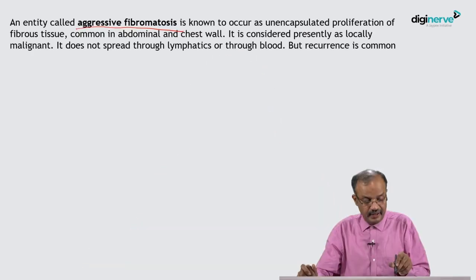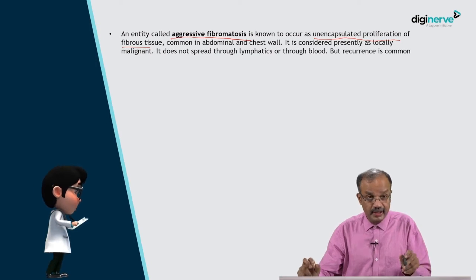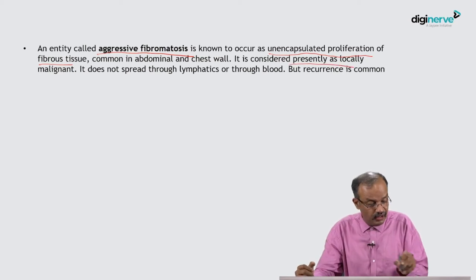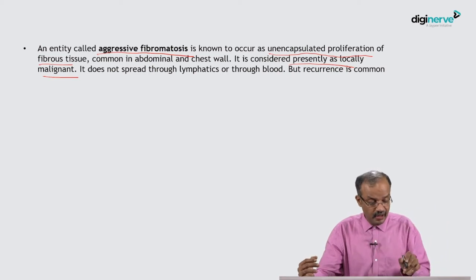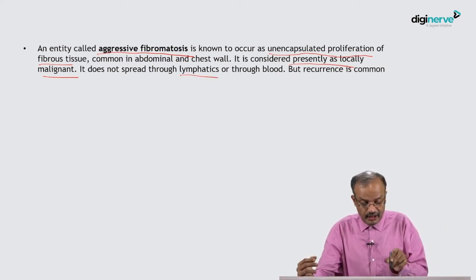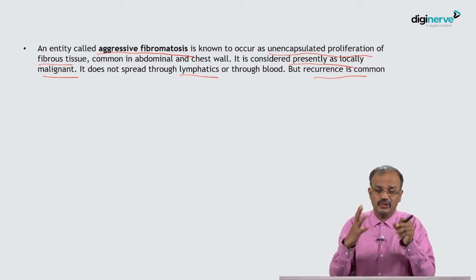An entity called aggressive fibromatosis is related to fibrous tissue. It occurs as unencapsulated proliferation of fibrous tissue and is common in the abdominal wall and chest wall. It is considered locally malignant — it usually does not spread to other systems like the lungs or through lymphatics. However, recurrence is common if not removed properly, and may occur even after removal.